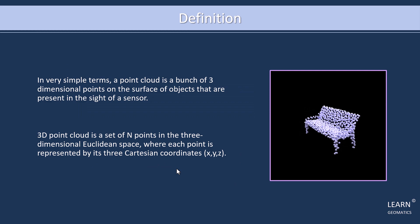There are two definitions I want to propose: a simple one and a mathematical one. The simple definition is that a point cloud is a bunch of three-dimensional points that represent the surface of objects captured by a sensor.